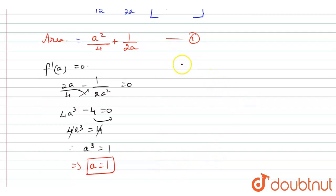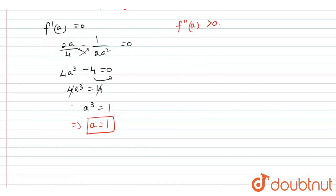Now I'm going to find f double dash of a, which is greater than or equal to 0, because a equals 1, which is the least value. Hence, we can say that a equals 1 is the least value.